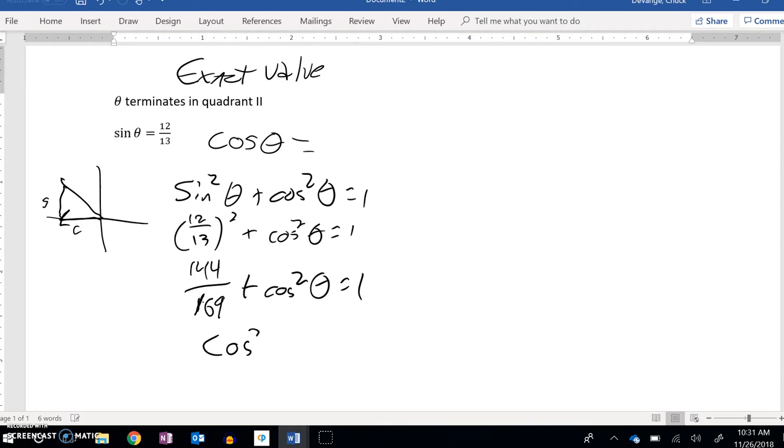Subtract that from both sides. Cosine squared is 1 minus 144 over 169. And this fraction, this 1, is 169 over 169. So I can go 169 minus 144 over 169. Cosine squared is equal to that. And so it seems like something I should be able to do. 169 minus 144 is 25. 25/169.